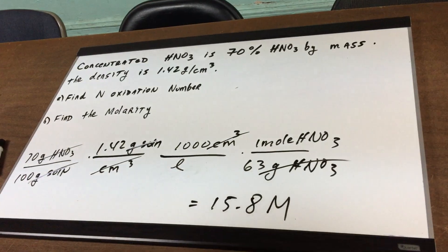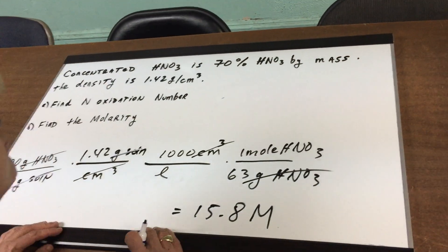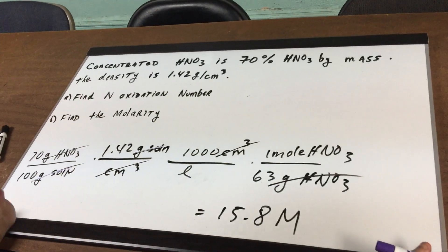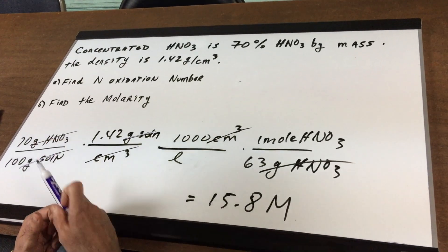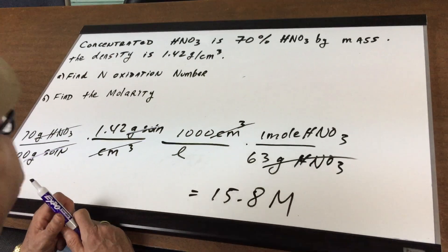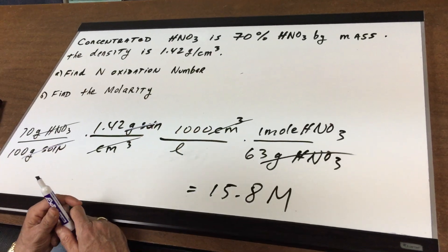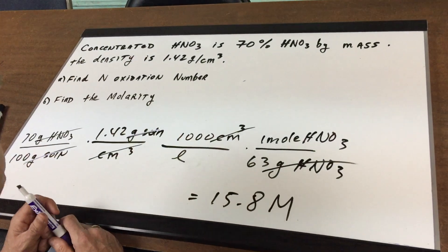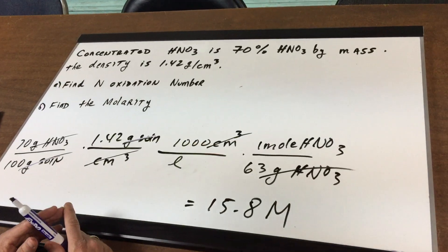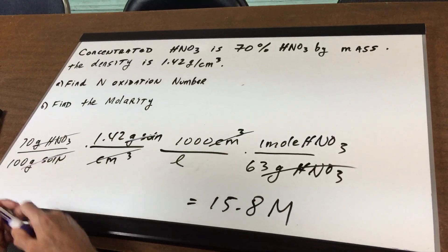What we have is concentrated nitric acid, 70% nitric acid by mass, and the density is 1.42 grams per cubic centimeter. One, I want to find the oxidation number of the nitrogen. And then B, find the molarity of the solution.